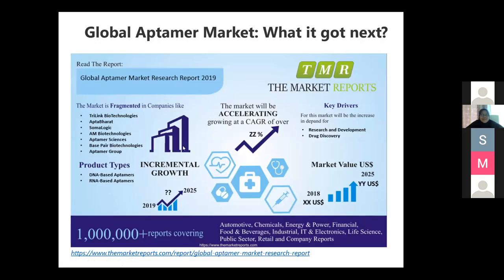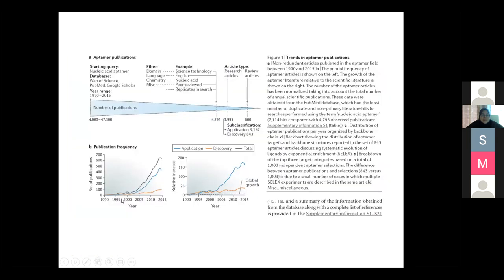This is my last slide — about the global aptamer market. There are emerging companies producing aptamers and offering services to produce aptamers and to provide targets that can be used to develop aptamers and sensors. From the beginning of aptamer production in 1990 up to 2015, publications and applications have been increasing rapidly. This means aptamers are very important nowadays. If we don't produce an aptamer for a particular target, we cannot use an aptasensor, so it's very important for researchers to be involved in aptamer production research.